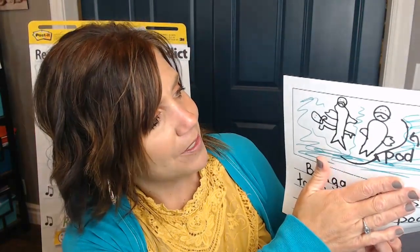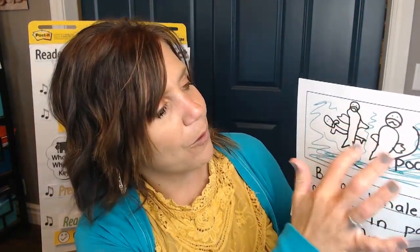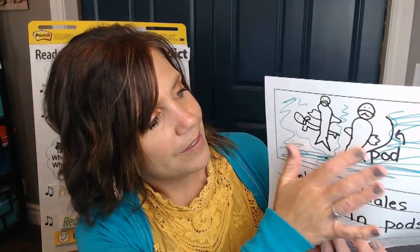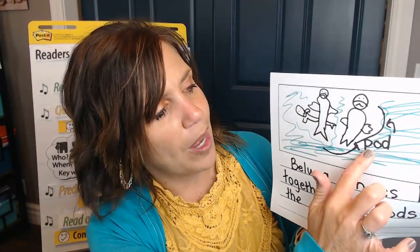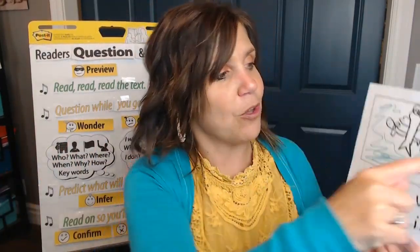Think about what you could draw in a picture to show what a pod is. What could you draw to show what a pod of whales is? Did you say draw a group of whales swimming together or living together in the ocean? Great job! So you could draw a group of beluga whales — three, four, or five whales swimming together in a group. I made an arrow around the whole group, so the whole group is called a pod. You could draw an arrow to the whole group of whales living together and label it 'pod.'